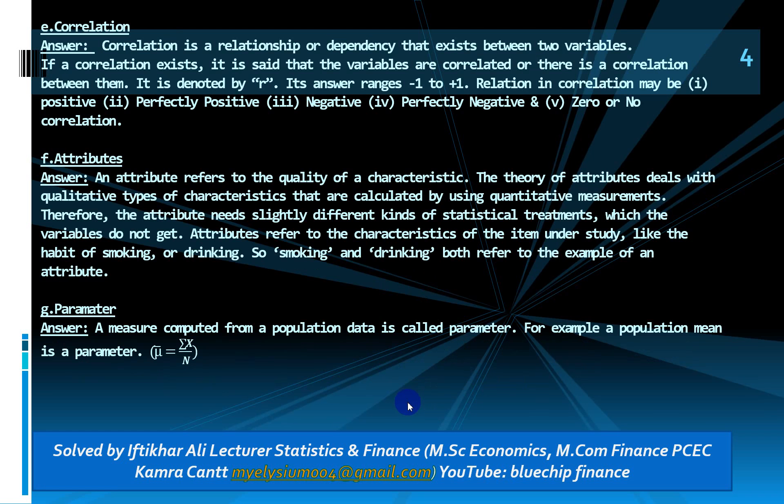Question five: correlation. Correlation is a statistical measure which calculates the relationship between two variables. Its answer ranges from minus 1 to plus 1, both inclusive. There are five different possible types of correlation: positive, negative, perfectly positive, perfectly negative, and zero correlation. The next one is attribute: attribute refers to the quality or characteristic.